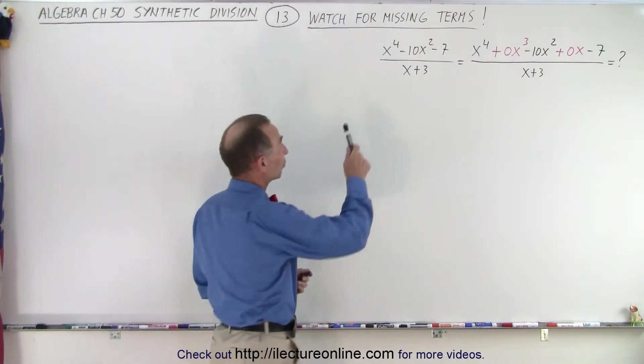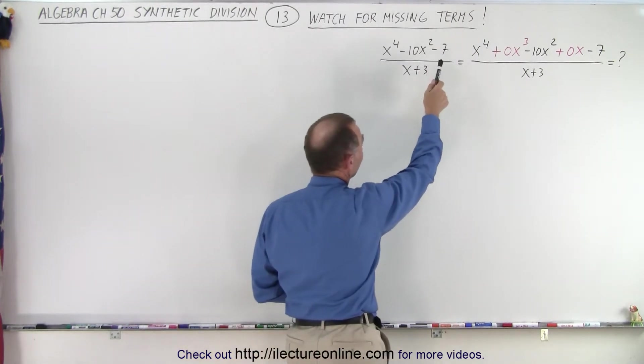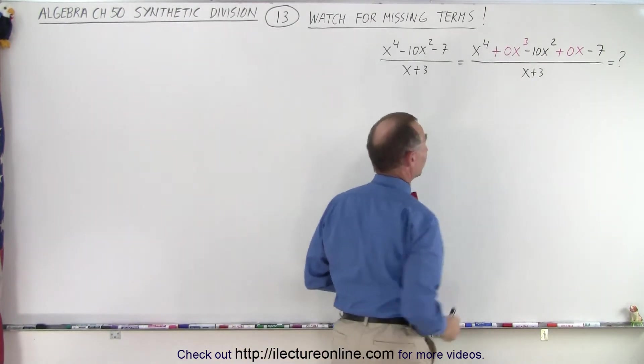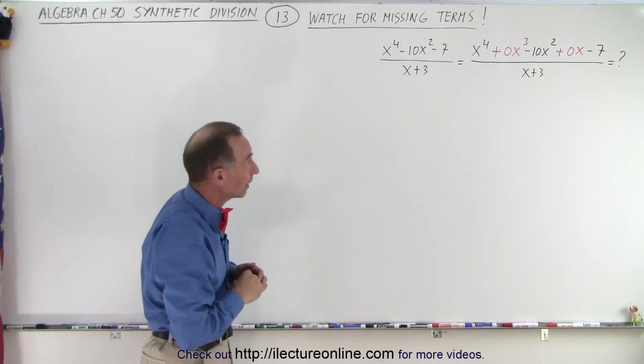Here we have x to the fourth minus 10x squared minus 7 divided by x plus 3. Notice the x cubed term is missing and the x to the first power is missing.